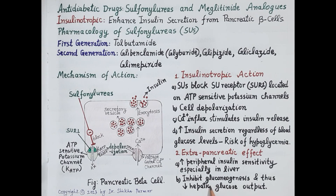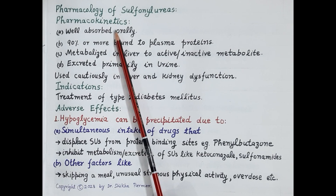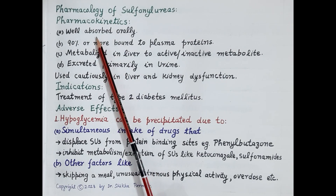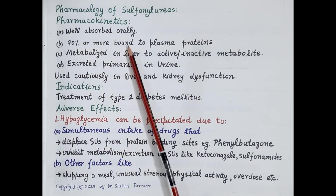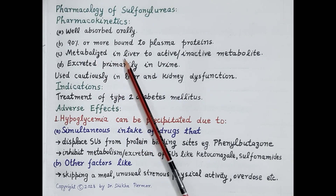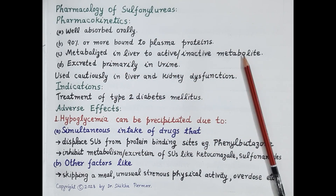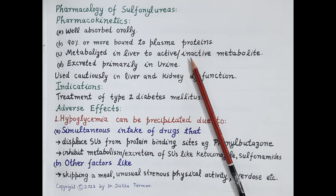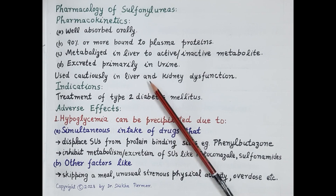However, as discussed, sulfonylureas are associated with the risk of hypoglycemia. Regarding pharmacokinetics: all sulfonylureas are well absorbed orally. These are 90% or more bound to plasma proteins and therefore exhibit low volume of distribution. They are metabolized in the liver and may produce active or inactive metabolites. These metabolites are excreted primarily in the urine, and thus these drugs should be cautiously given to patients with liver and kidney dysfunction.